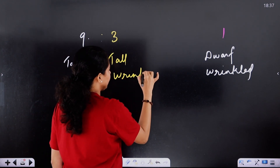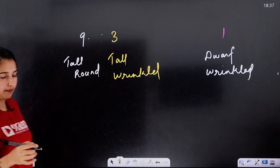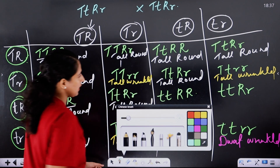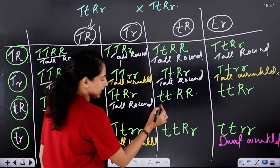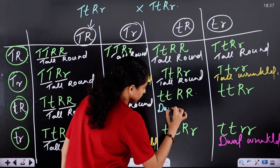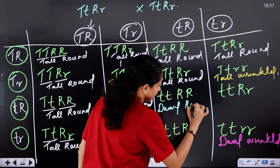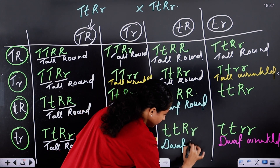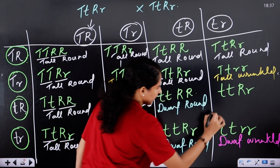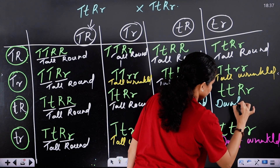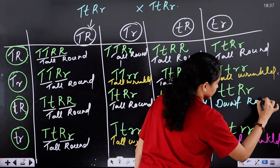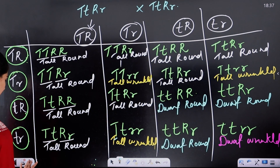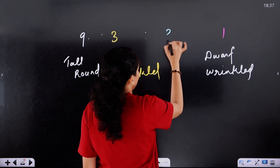Tall and wrinkled is a new combination. And if you have other characters — dwarf and round — that is also a new combination. Dwarf round appears here again. So the fourth phenotypic class is dwarf round.